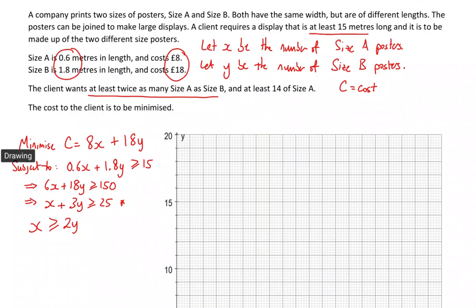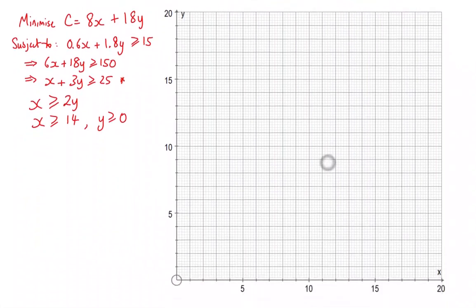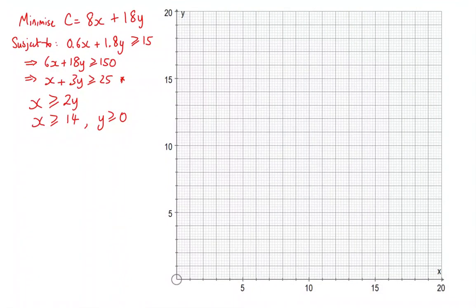We also have at least 14 must be of size A, so x must be greater than or equal to 14. And of course we know that y would have to be greater than or equal to 0 because we couldn't have negative y, so that's the non-negativity part. Now we've got our constraints and our linear programming problem, so now we need to draw it.